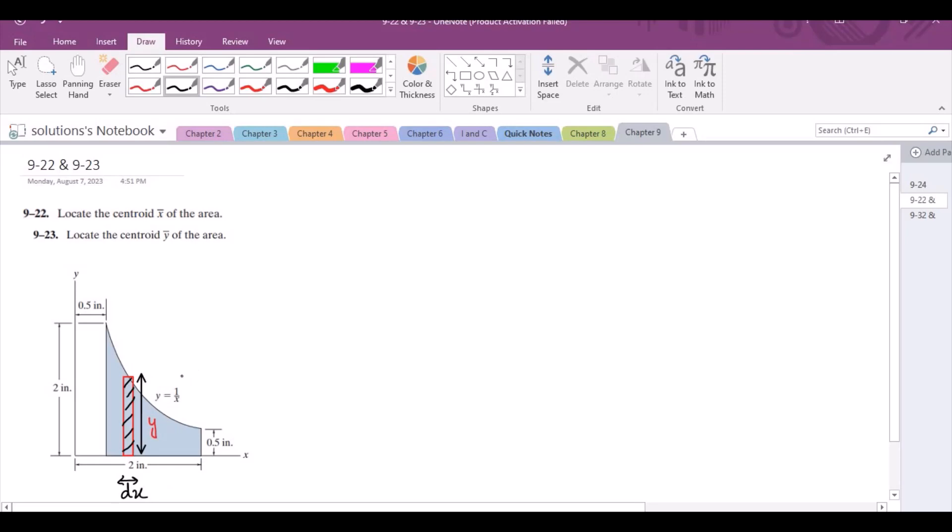Now let's mark the point of intersection between the curve and the rectangular strip. Let's call this x, y. And let us also locate the x and y coordinates of centroid of this rectangular strip. Now the strip is rectangular, which means the centroid lies at its geometrical center, somewhere in the middle, right here. So let's call this point x curly and y curly.